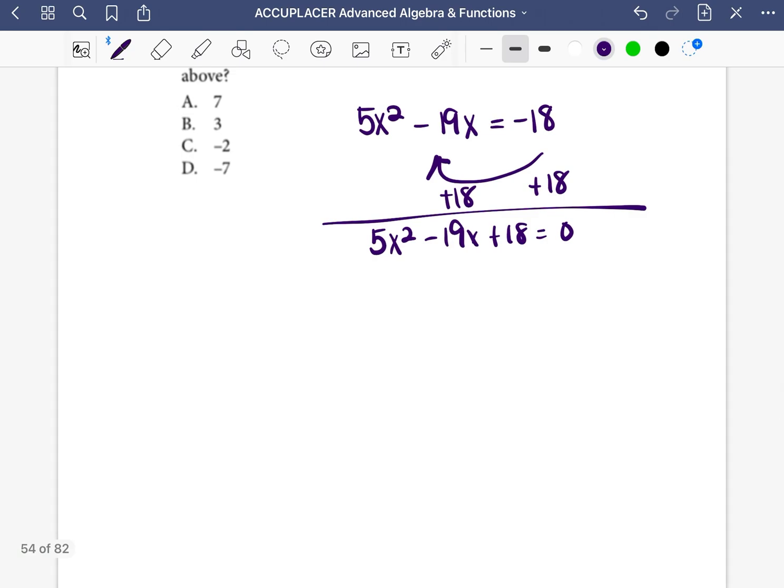Now, when we're factoring equations that have a coefficient larger than one, we have to do a different set of steps. In this case, we need to multiply 5 times 18. So 5 times 18 is 90. And now we need to find two numbers that multiply to equal 90 that add to equal that middle number, negative 19.